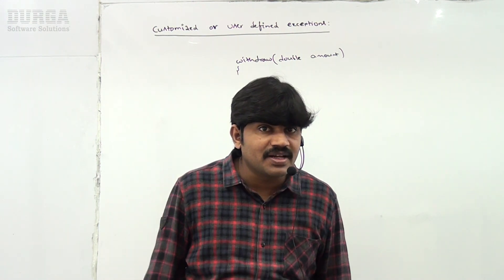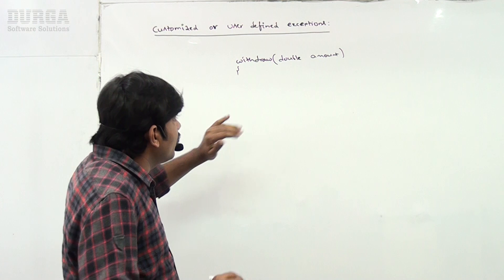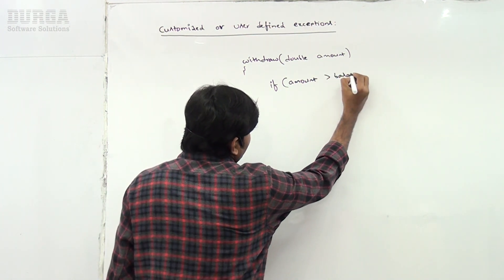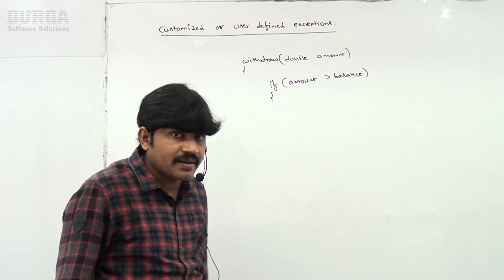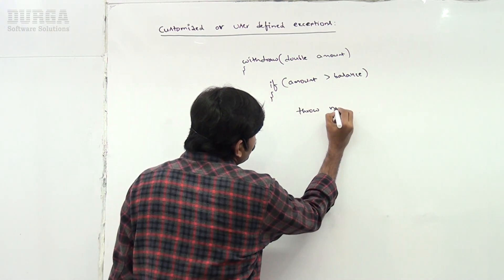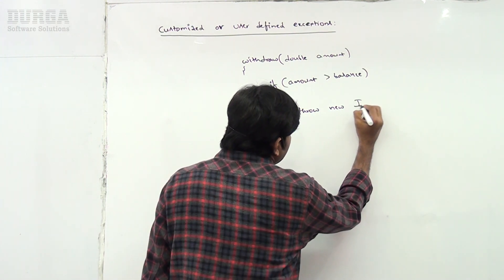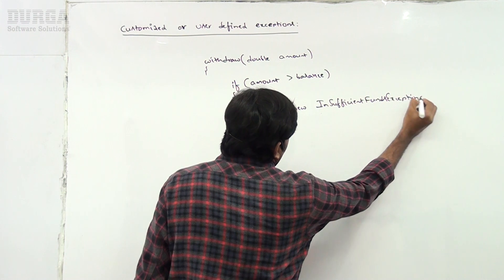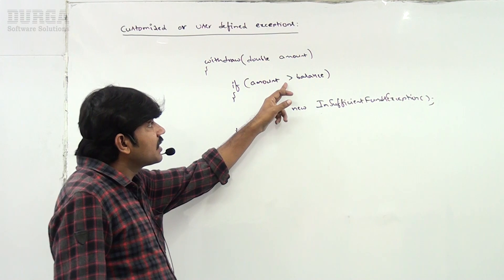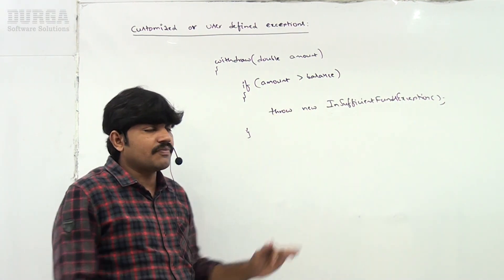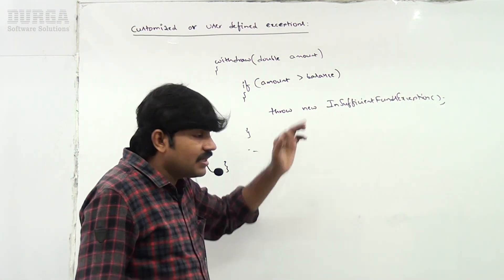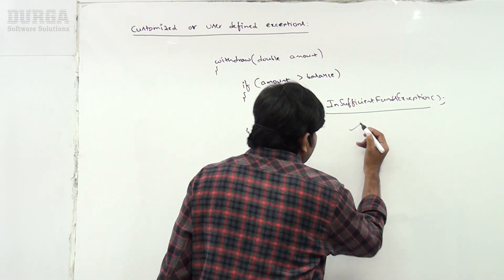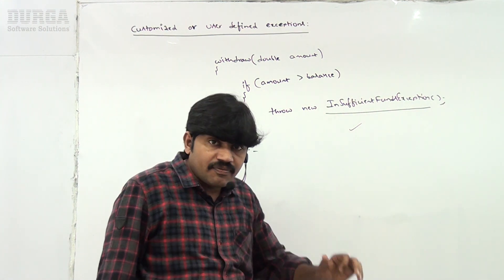Immediately we will get an InsufficientFundsException. Now observe here: if the requested amount is greater than the available balance, then I have to use throw — throw new InsufficientFundsException. I have to raise that exception. InsufficientFundsException is not a Java inbuilt exception; based on my programming requirement I defined this one. Such type of exception is called a user-defined or customized exception.